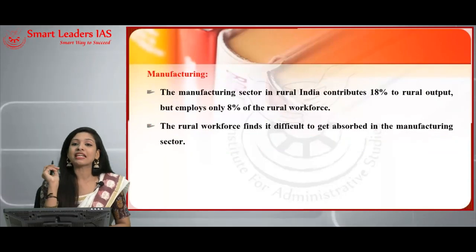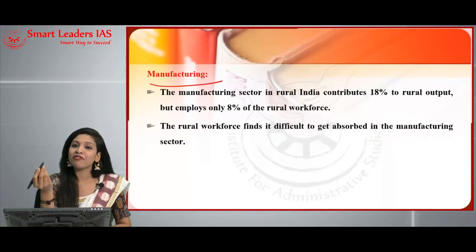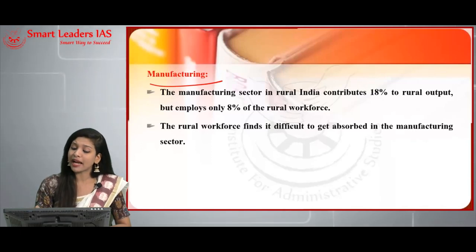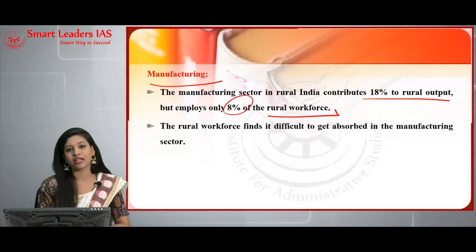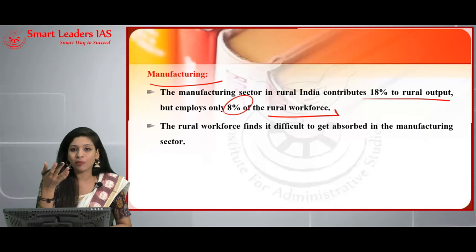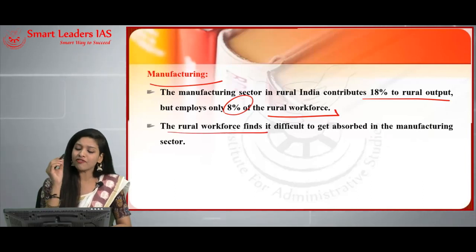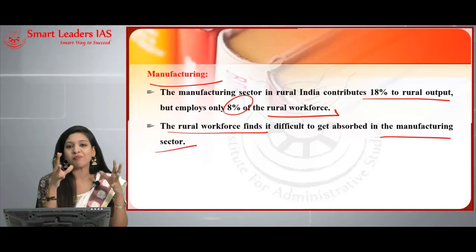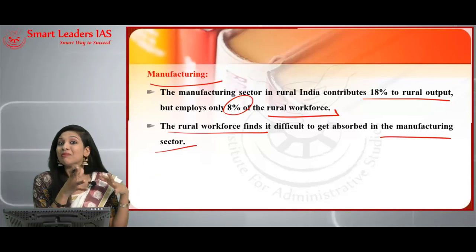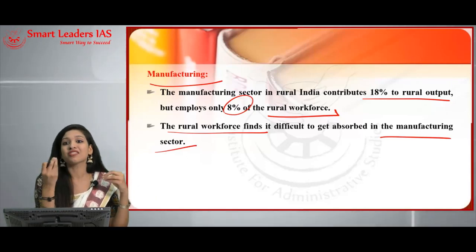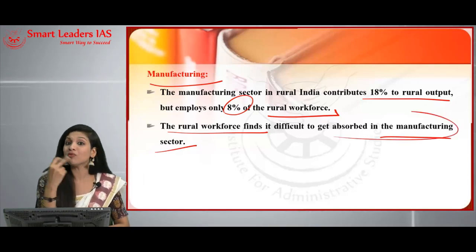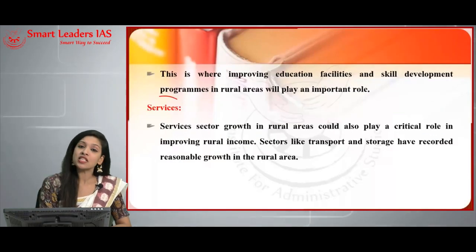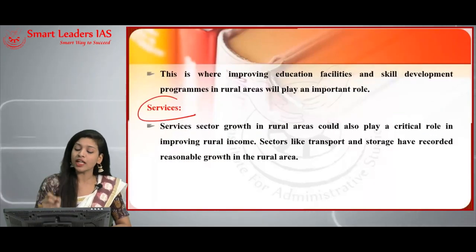The manufacturing sector in rural India contributes 18% to rural output but employs only 8% of the rural workforce, indicating that more employment is needed there. However, rural workers find it very difficult to get absorbed in the manufacturing sector because most are unskilled or semi-skilled — manufacturing requires at least some level of skill. This is one key barrier to rural employment in manufacturing.